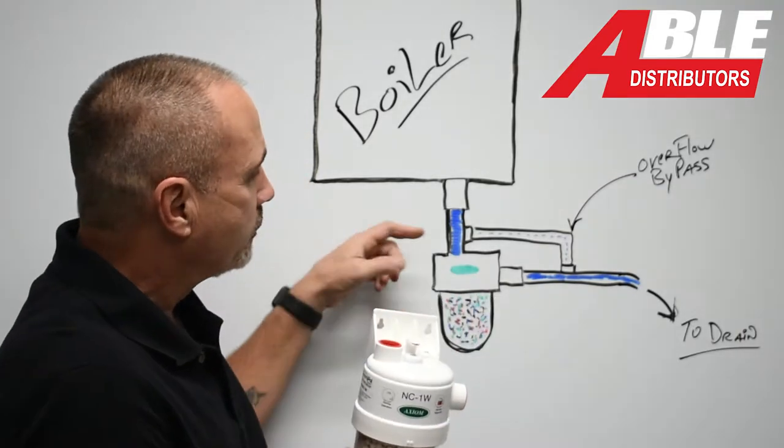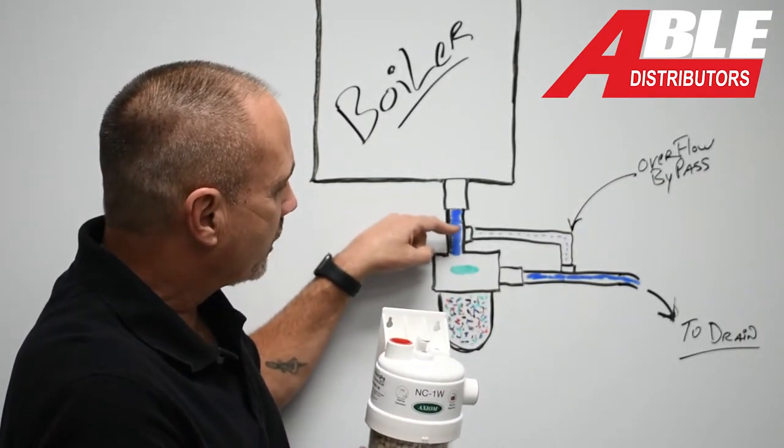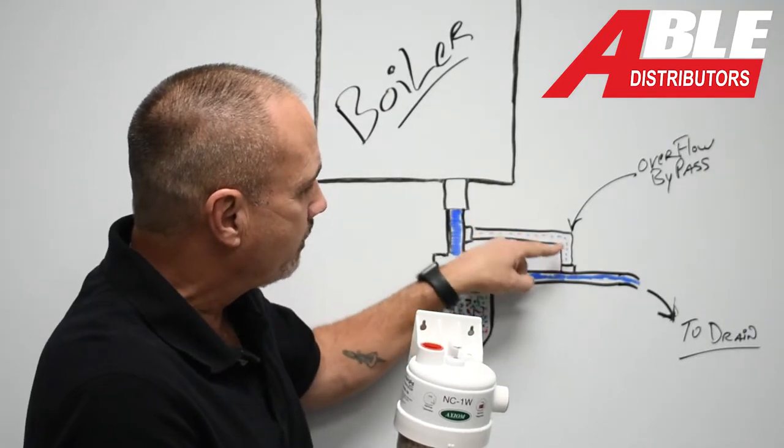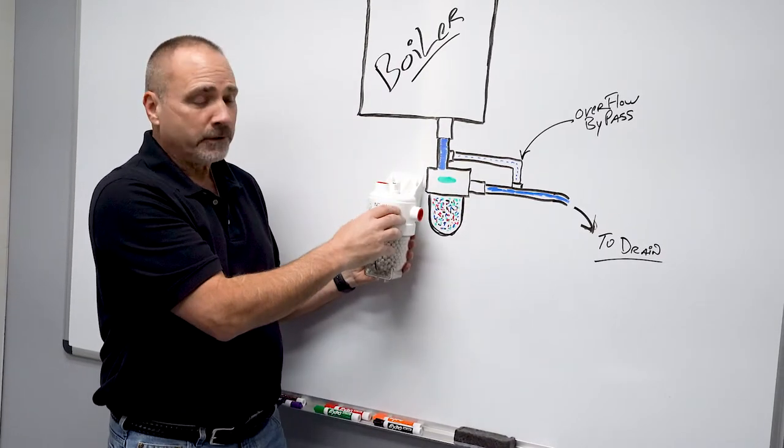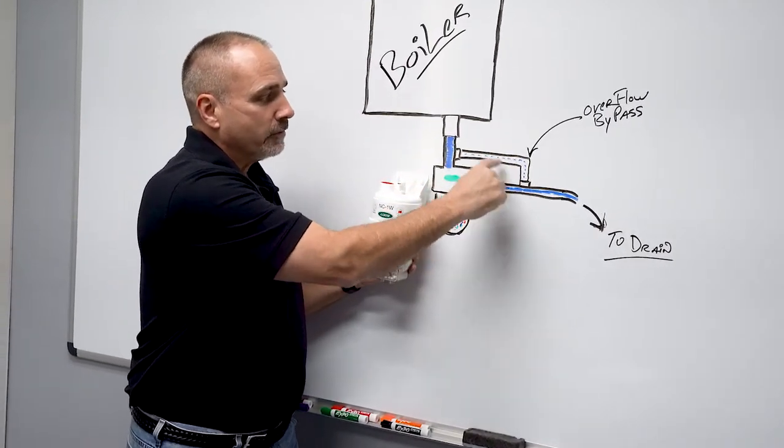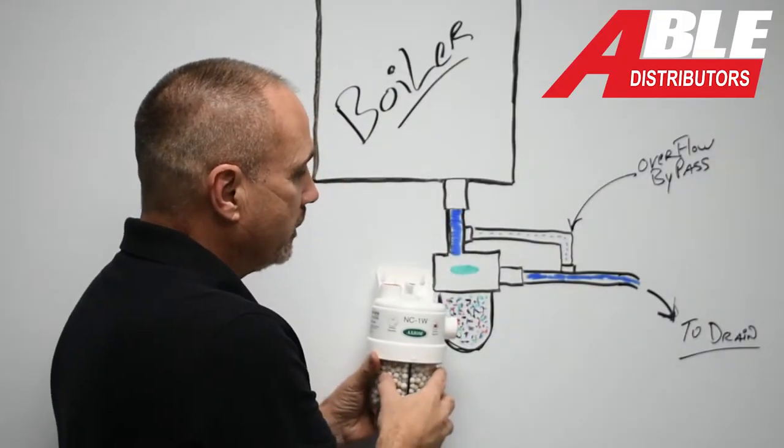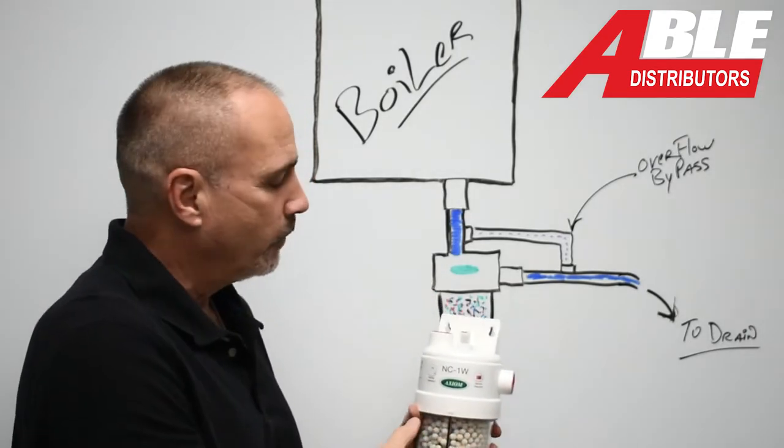What I always recommend is go with a T and do a bypass overflow. So if this ever gets full to the point where it's going to start backing up into the boiler, it just goes in a little bypass route. That way you're set no matter what.